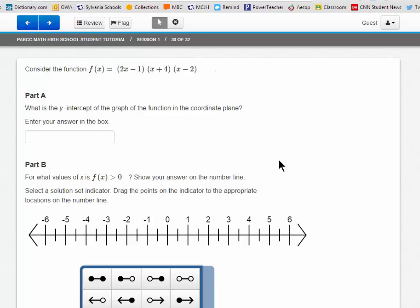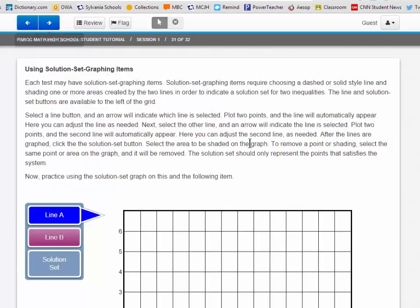Let's move now to the next item and last, solution set graphing items. Each test may have solution set graphing items. These items require choosing a dashed or solid line and shading one or more areas created by the two lines in order to indicate a solution set for two inequalities. The line and solution set buttons are available to the left of the grid.